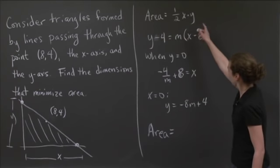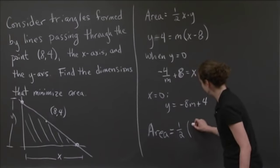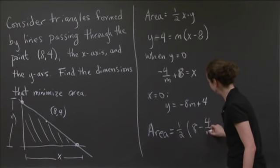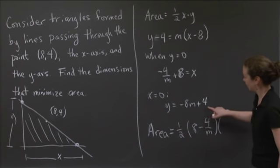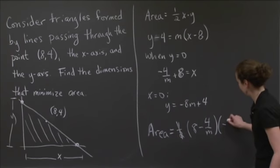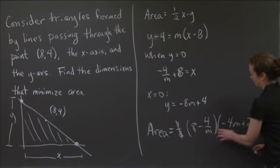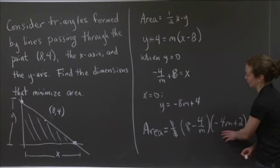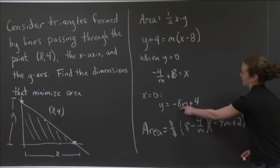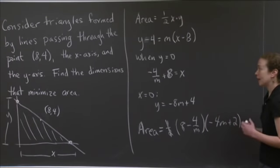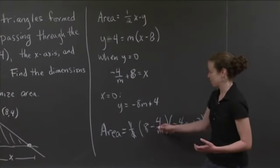So now what I'm going to do is plug these two things into the area equation. Area is now equal to 1/2 of x times y. So 1/2 of (8 - 4/m) times, you know what I'm going to do? I'm going to take this 1/2 and kill off terms in there so I don't have to worry about it anymore. -4m + 2. So this is x and this is half of y. So just to make it simpler, I'm not carrying through the 1/2, I'm killing off half of the things. Dividing every term in y by 2.